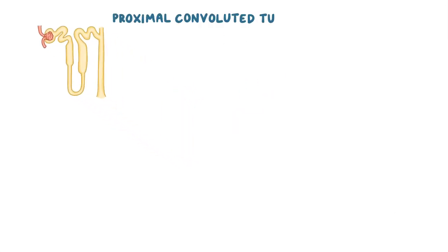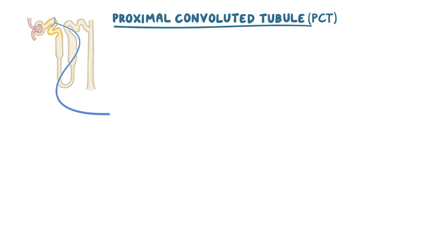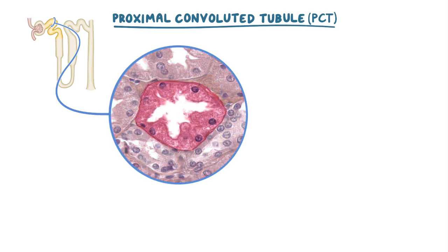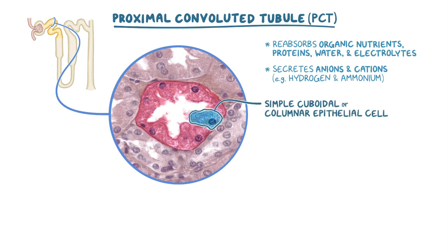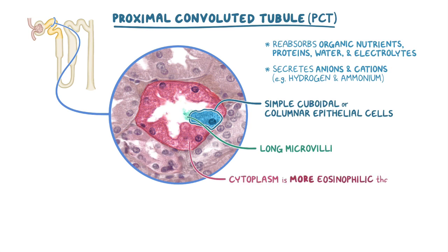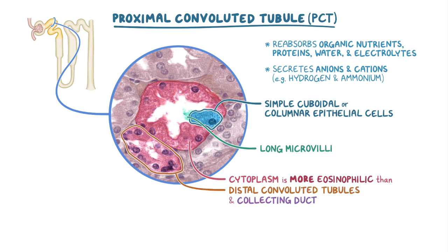Typically, the proximal convoluted tubule, or PCT for short, can only be seen in cross-sections because of the winding, or convoluted, path it takes through the cortex. This part of the nephron reabsorbs many of the substances the body wants to keep, such as organic nutrients, proteins, as well as most of the water and electrolytes in the ultrafiltrate. The PCT also secretes anions and cations, such as hydrogen and ammonium, into the lumen of the tubule for excretion. The walls of this tubule consist of simple cuboidal or columnar epithelial cells with long microvilli. The cytoplasm in each cell is more eosinophilic than the cells that make up the distal convoluted tubules and collecting ducts, which is why the PCT cells will typically stain a slightly darker pink.